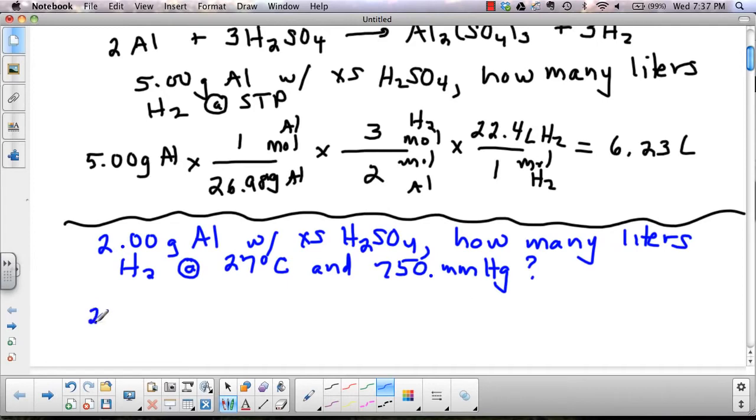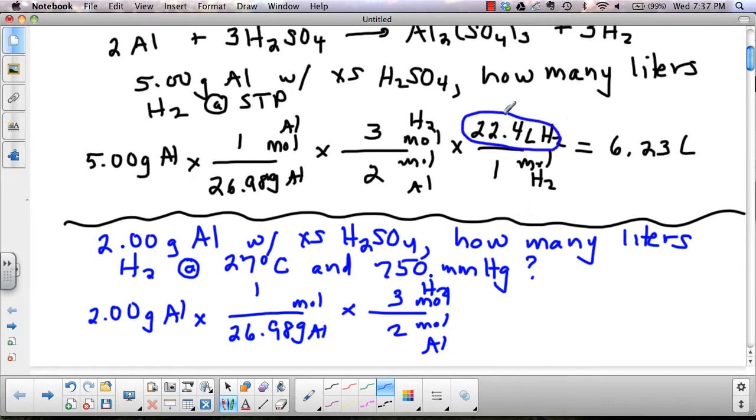So I'm going to start, as I did before, with 2 grams of aluminum. I'm going to change my grams of aluminum to moles of aluminum, and change my moles of aluminum to moles of hydrogen. So this first part is the same. 26.98, 3 to 2. And can I change moles of hydrogen to liters of hydrogen? I can't, because I can't use 22.4 this time. So I'm going to stop here, and I'm going to calculate my moles of hydrogen.